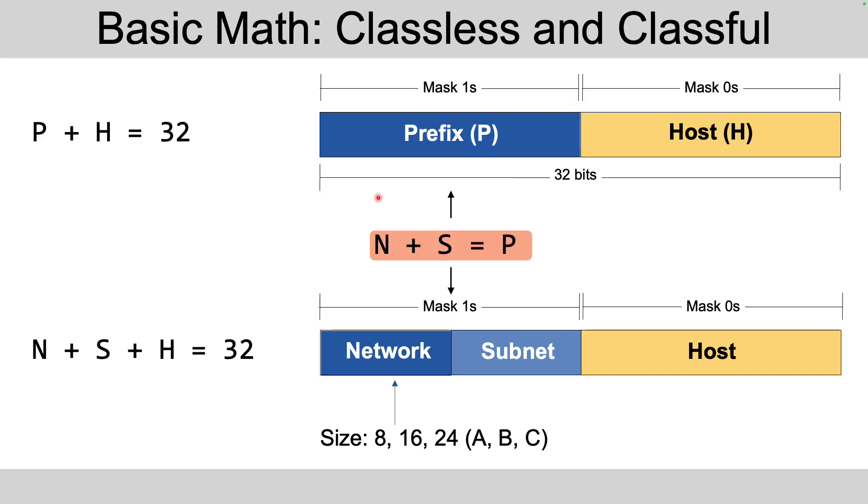But if we add them together, it turns out the width of the prefix part is the same as the combined network and subnet part. So the prefix length equals network plus subnet bit length. So it's the same width for each of those. So you can do a little math to figure it out.